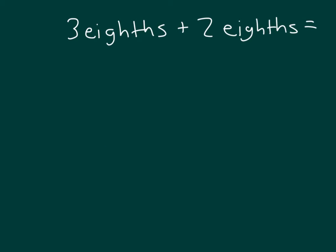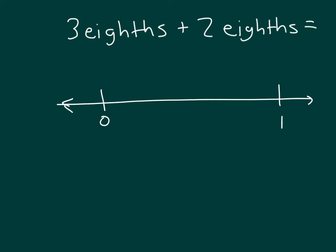Let's work through another problem. Here we have three-eighths plus two-eighths — an addition problem this time. We'll start with our area model. We're going three-eighths and adding two-eighths, so we will start with whole numbers zero and one. Since we're working with eighths, we'll divide our number line into eight parts. There I have fours, and then I'll have eights. I'll go ahead and label my number line.